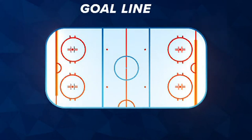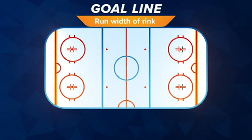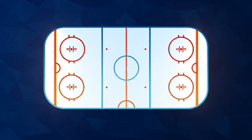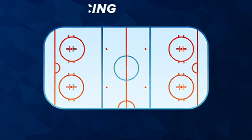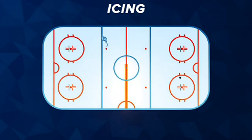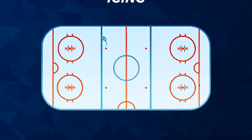Goal line: the two red lines that run the width of the rink and are lined up with the goal opening. Icing: if a player shoots the puck and it crosses the center line and the opponent's goal line, that's icing.